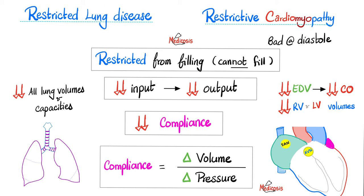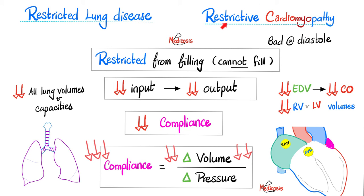When I cannot fill as a lung or as a heart, compliance decreases. Because compliance is the change in volume over change in pressure. If I cannot expand and fill because I have fibrosis, what happens to the change in volume? It decreases. And what happens to my compliance? It decreases. So restrictive cardiomyopathy is a pathology of the muscles of the heart where the heart is restricted from filling, with low compliance.